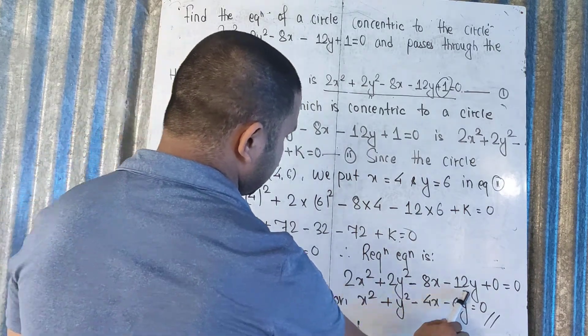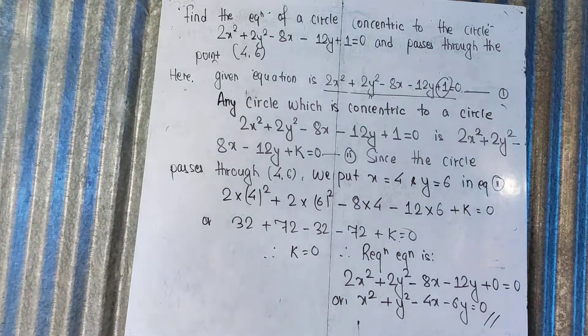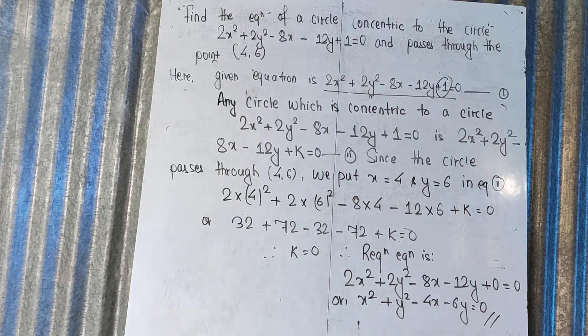So we have 2(4)² + 2(6)² - 8(4) - 12(6) + k = 0, or 32 + 72 - 32 - 72 + k = 0. This gives k = 0.